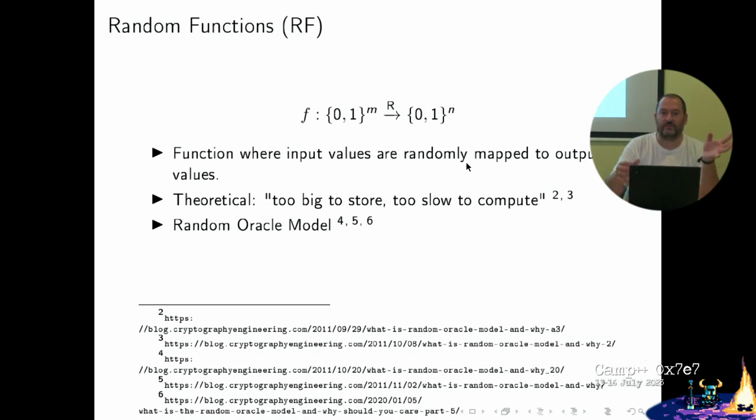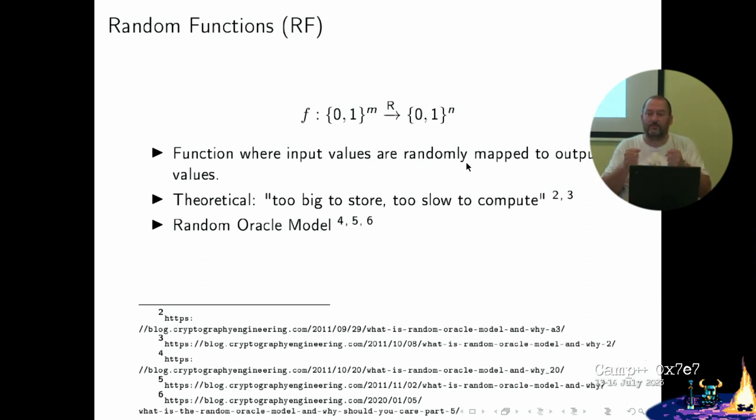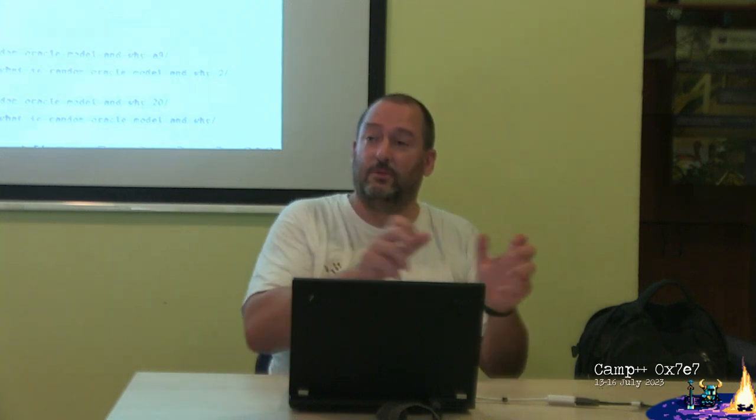This leads to the random oracle model, where we model random functions with something like a gnome sitting in a hut. You pass the gnome a value, and the gnome looks on a scroll to see if he knows it already. If not, he writes it down, assigns a random value not yet assigned, and returns it — and every time you come back with the same value, the gnome finds it on his scroll and returns the same result. If something is proven secure in the random oracle model, that's a pretty good heuristic that it's secure in the real world, even though contrived counterexamples exist.